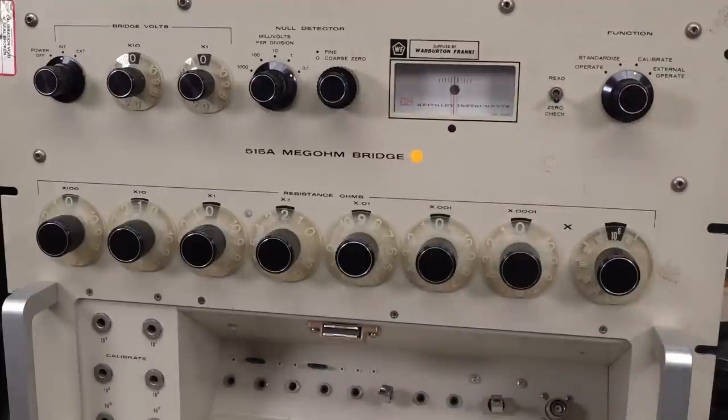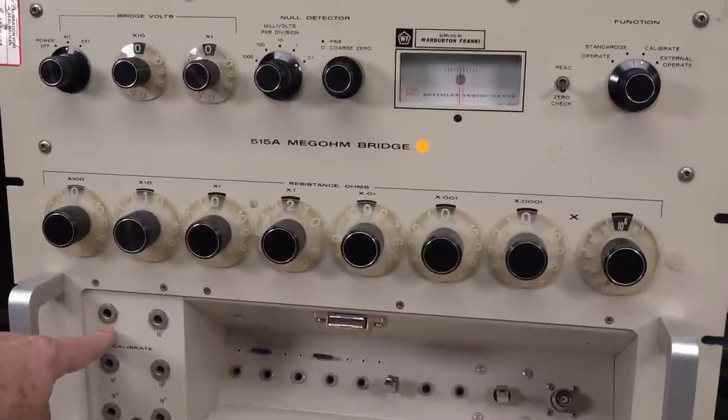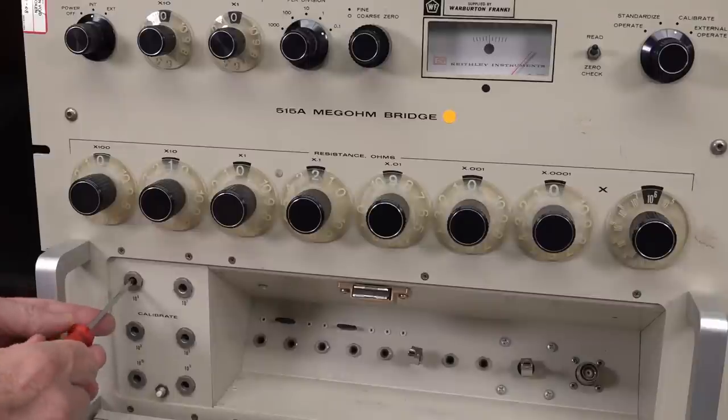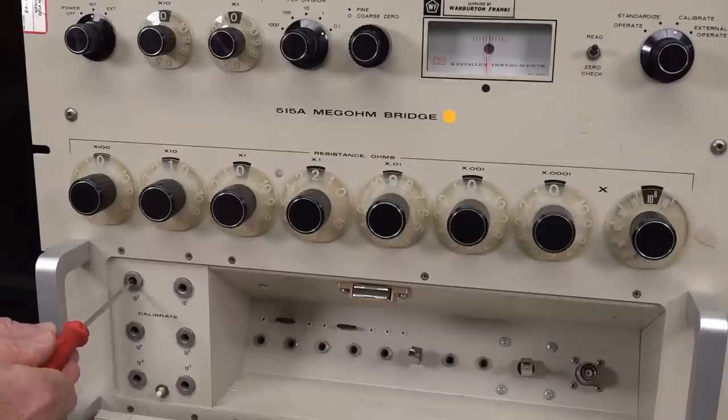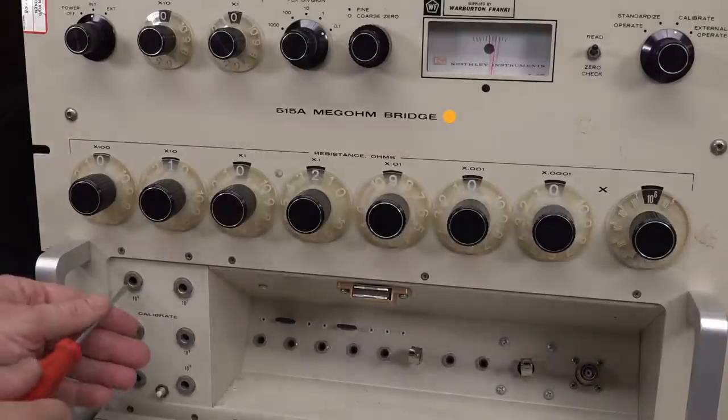And then we have to set it to zero check. And then over to calibrate like this. And we adjust the ten to six calibration potentiometer, which is down here. So I'll put that back to read. And we need to, oh, oh, whoa. That's a bit twitchy. That's twitchy. Definitely tongue at the right angle for this. Back a little bit. Whoa. Jeez, that's tough. Oh, no, I took pressure off it.